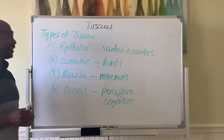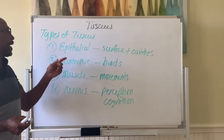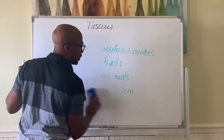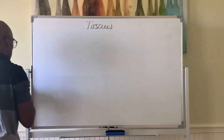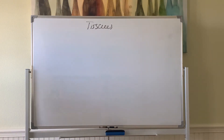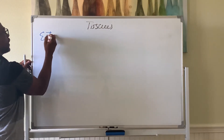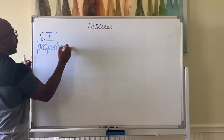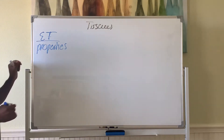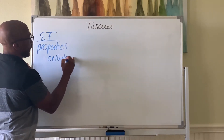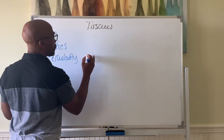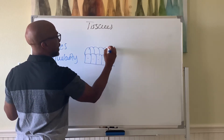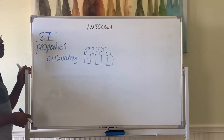So those are the four types of tissues: ET, CT, MT, and NT. Now we'll look at epithelial tissue. Epithelial tissue has properties that make it very useful based on where it's located. One property is high cellularity — the cells are tightly packed together with no gap between them, which prevents things from passing between the cells.